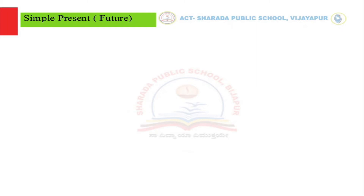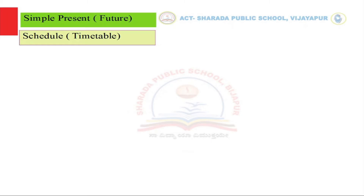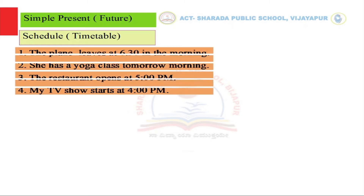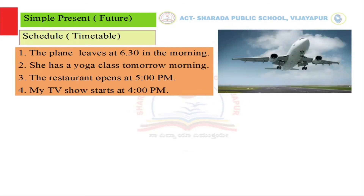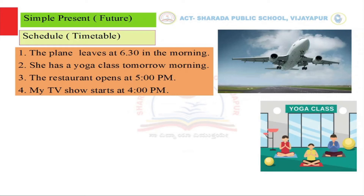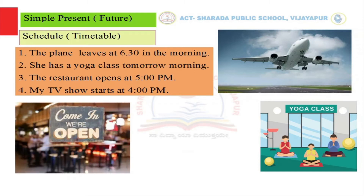We can also use the simple present to talk about the future. We use simple present when talking about routine, timetable, and scheduled events in the future. For example: 'The plane leaves at 6:30 in the morning.' 6:30 hasn't happened yet — it's in the future — but because it is a scheduled, timetable event, we use the simple present tense.